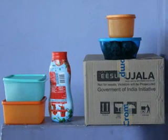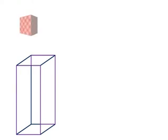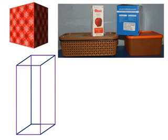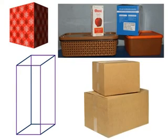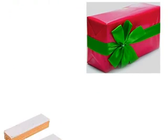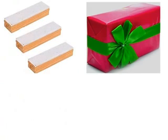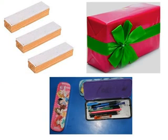The faces of some solid figures are polygons, which means a shape which has regular features on it. Examples: gift box, duster, mathematical instrument box, etc.